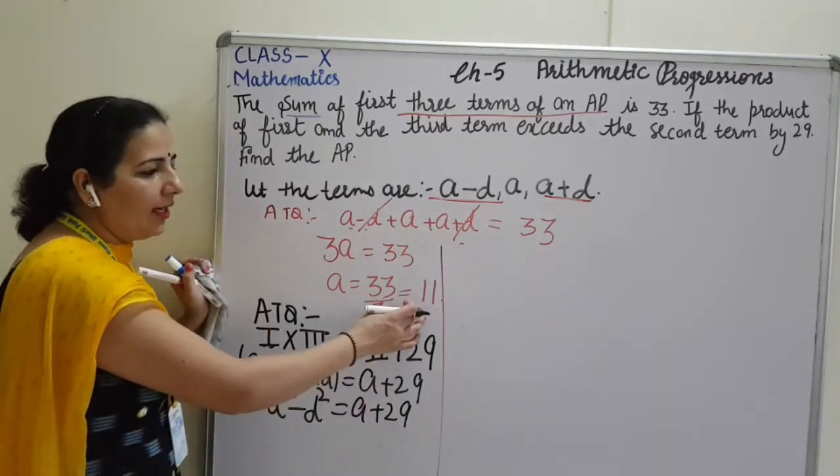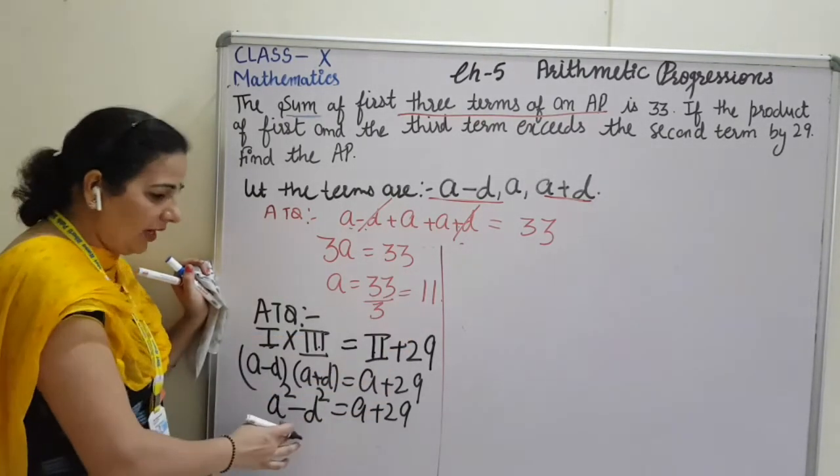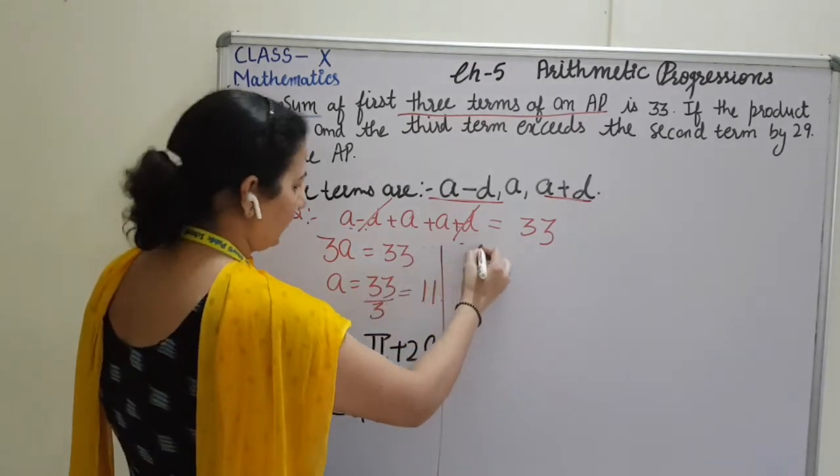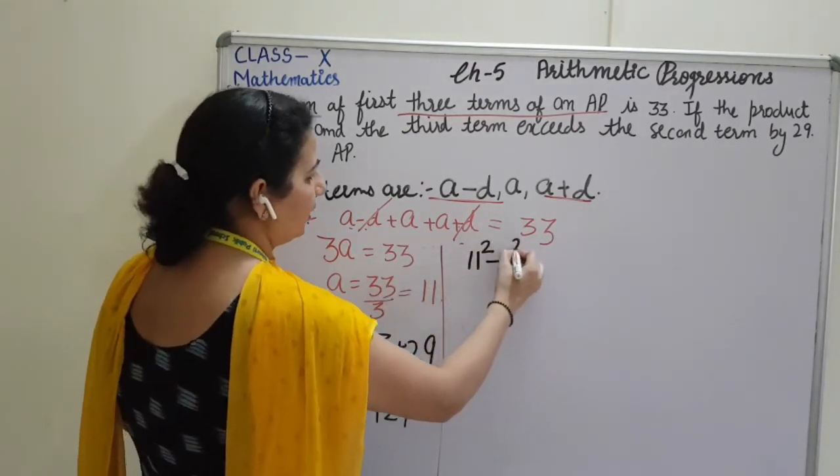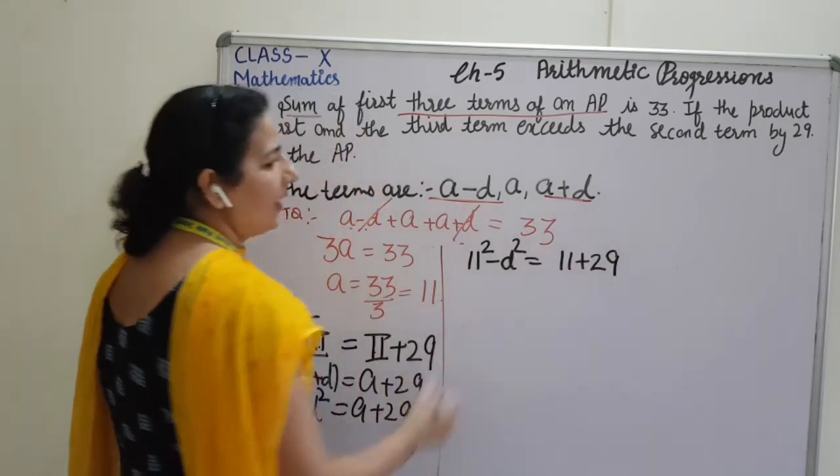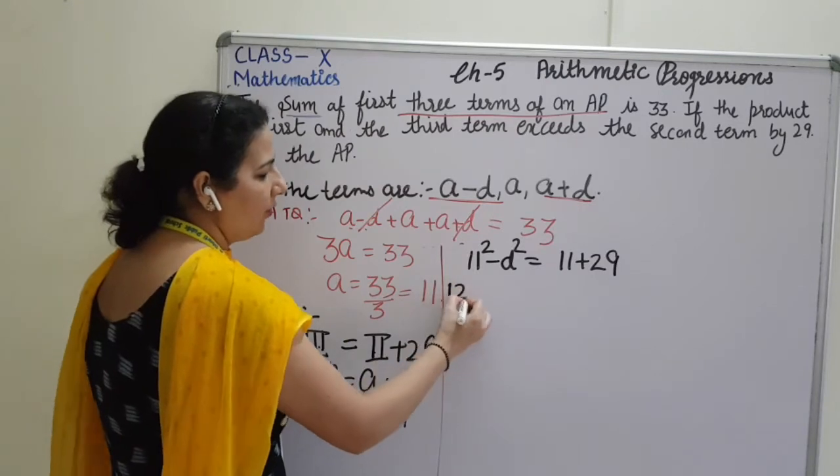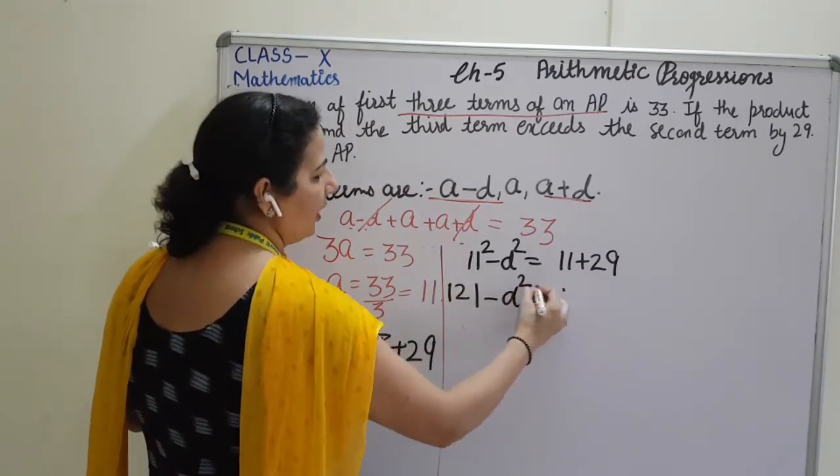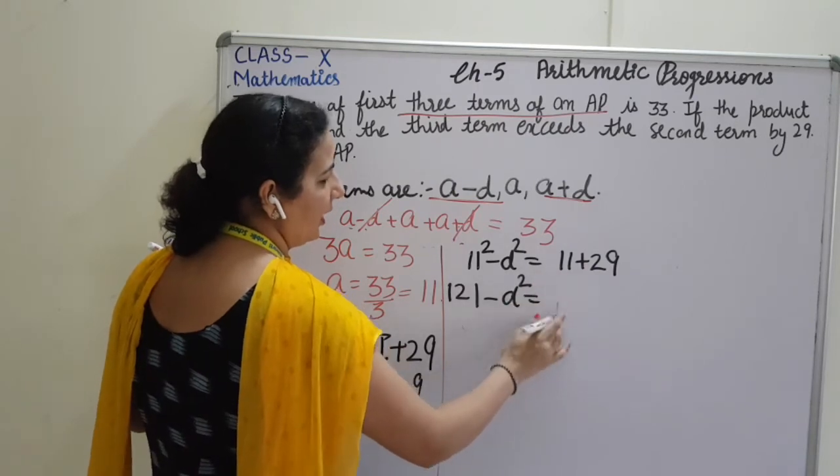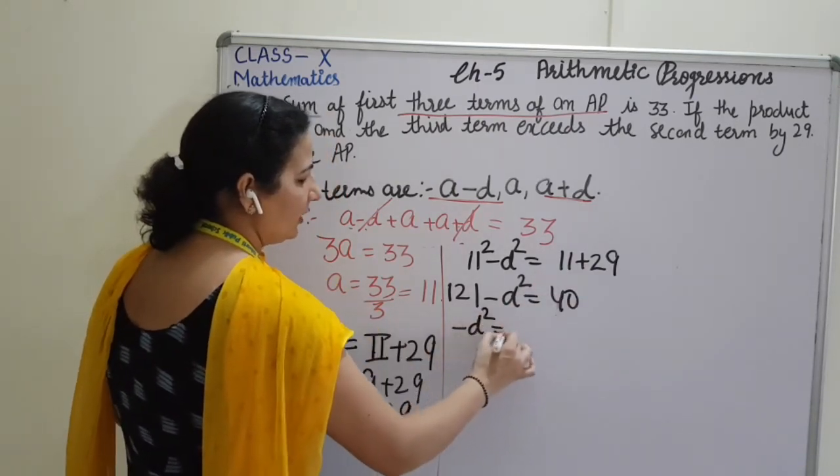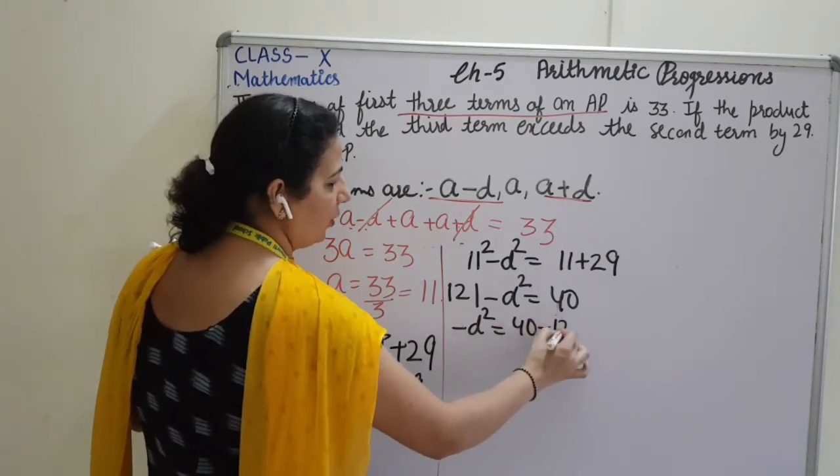Now, we have already calculated that our A is 11. We can put the value of A here. So, it can be written as 11 square minus D square is equals to 11 plus 29. 11 square is 121, minus D square is equals to 11 plus 29. We know that it will be 40.